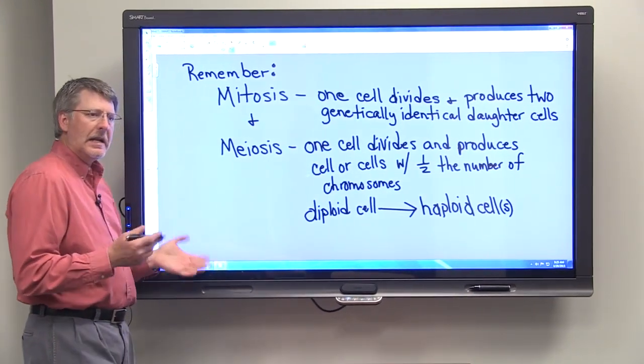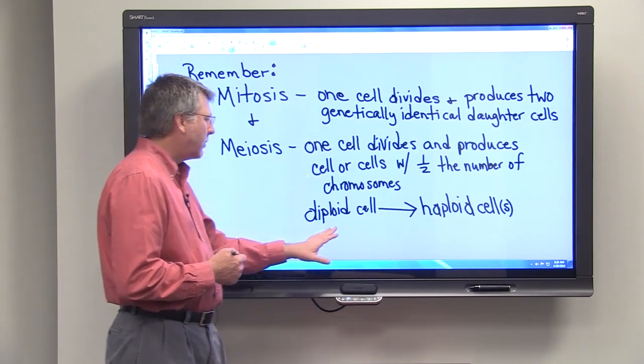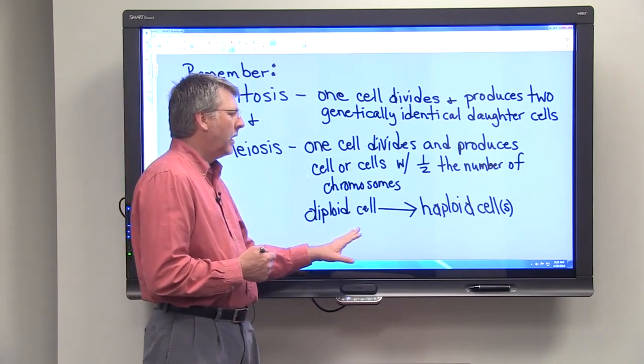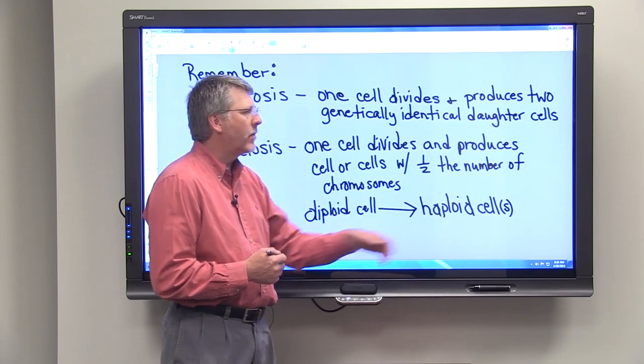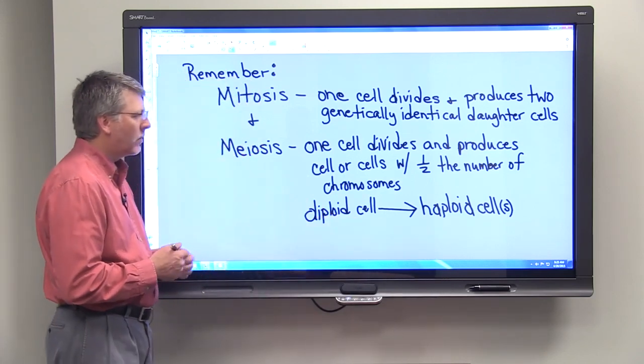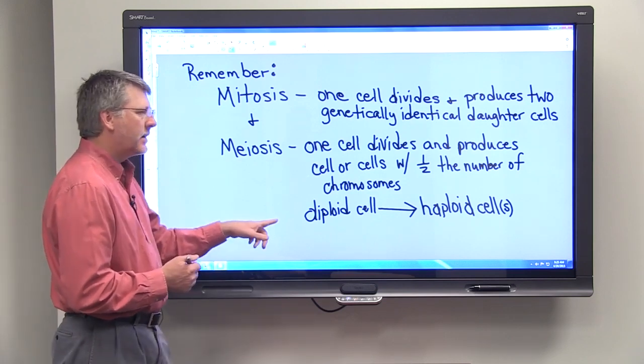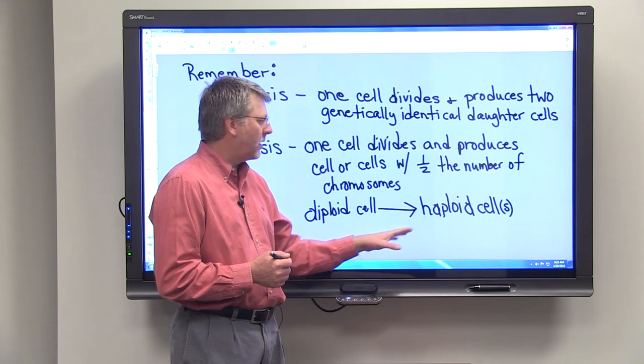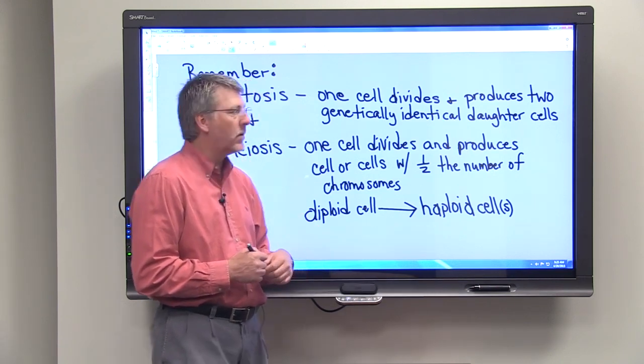Now it's not just any half the number of chromosomes though. In fact, we take a diploid cell and go through this process of meiosis and we wind up with cells or a cell that is haploid. Diploid cells have two copies of each chromosome, whereas haploid cells have only one copy of each chromosome.